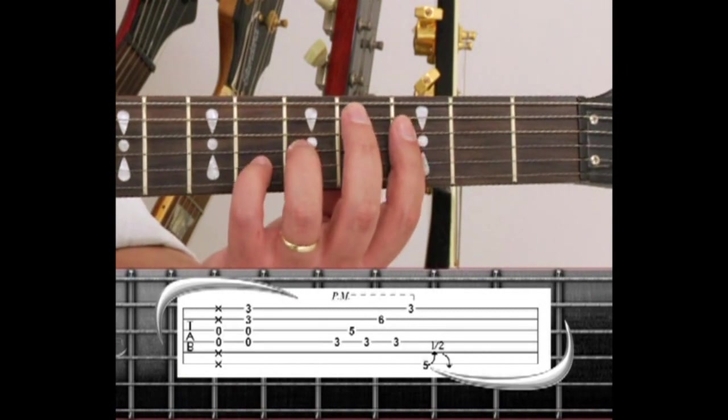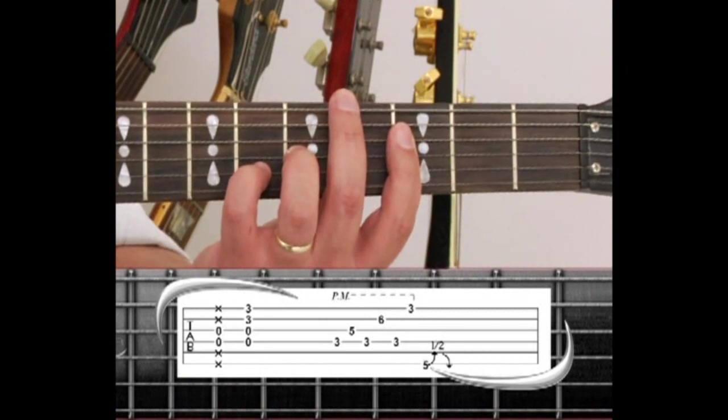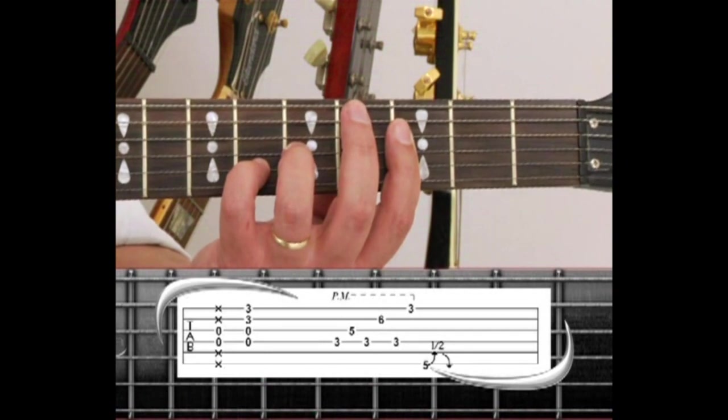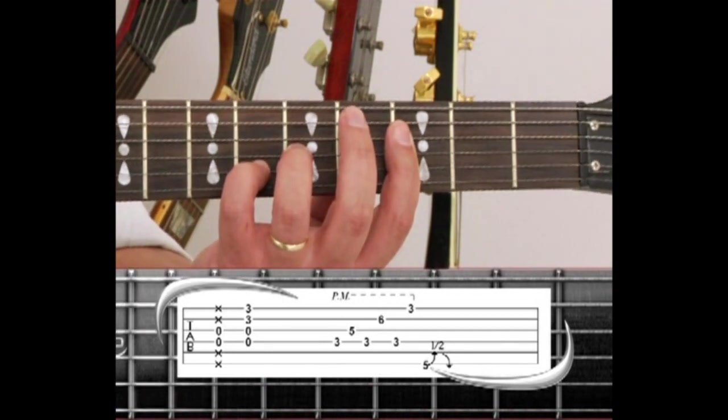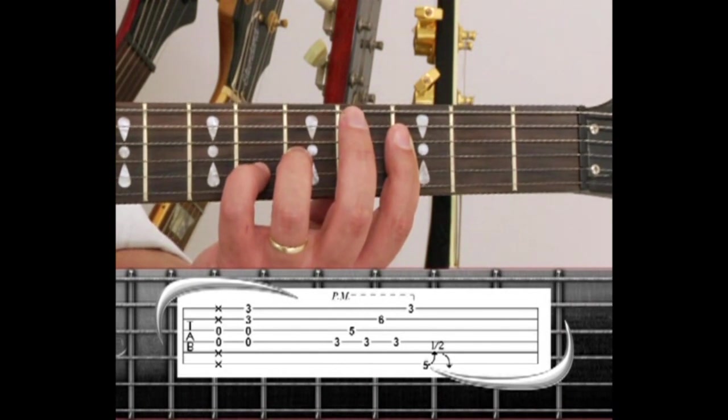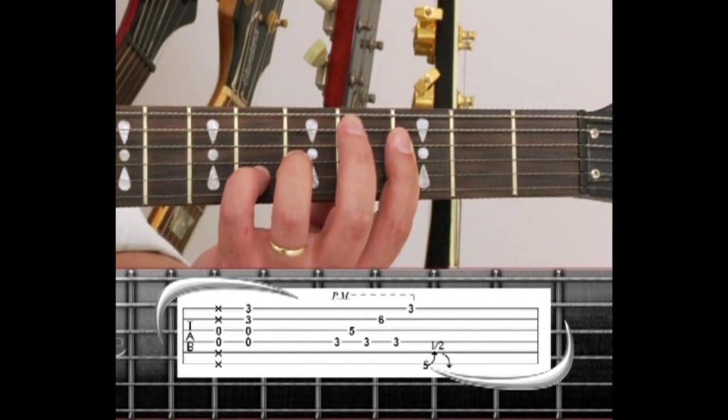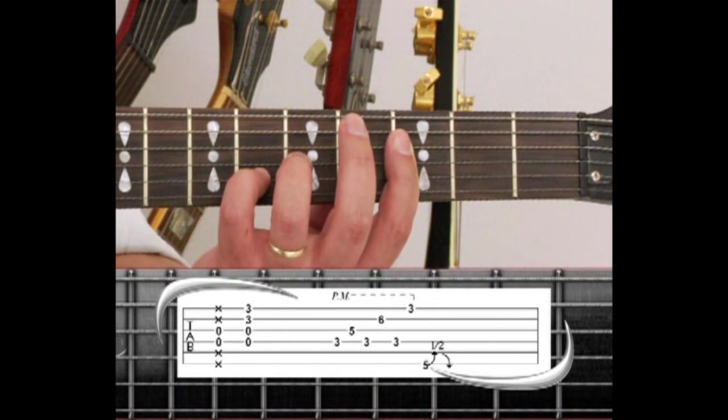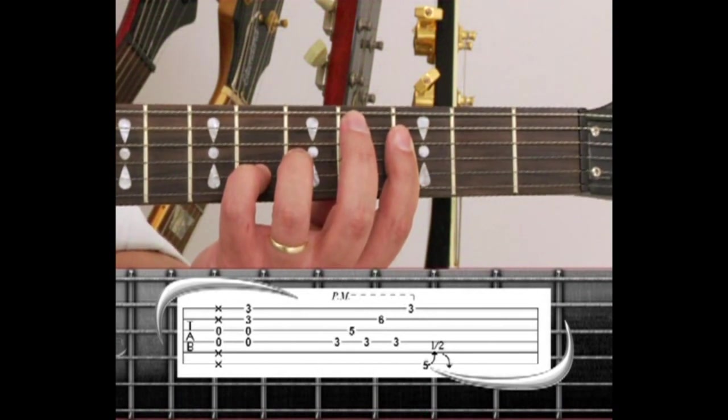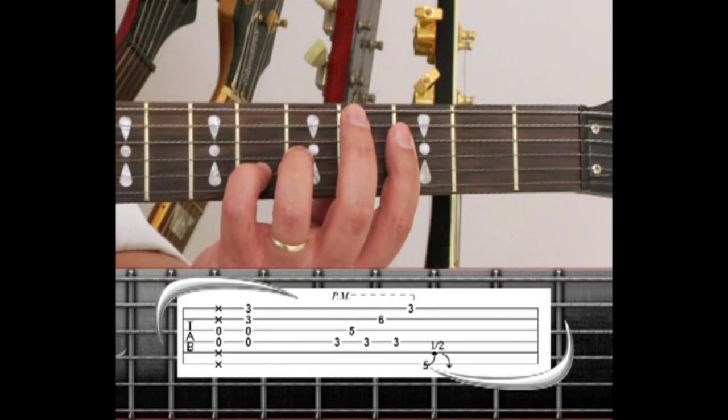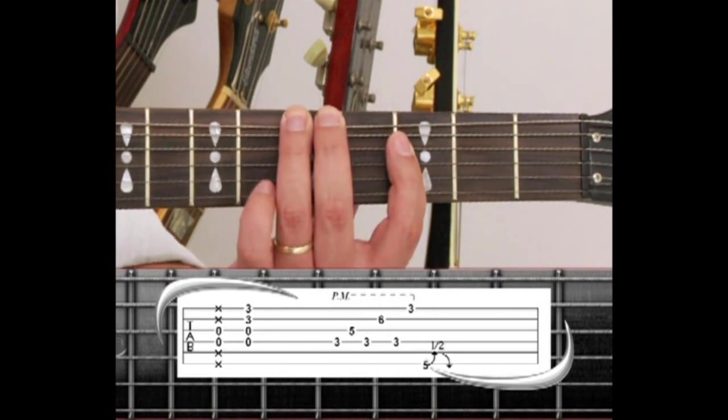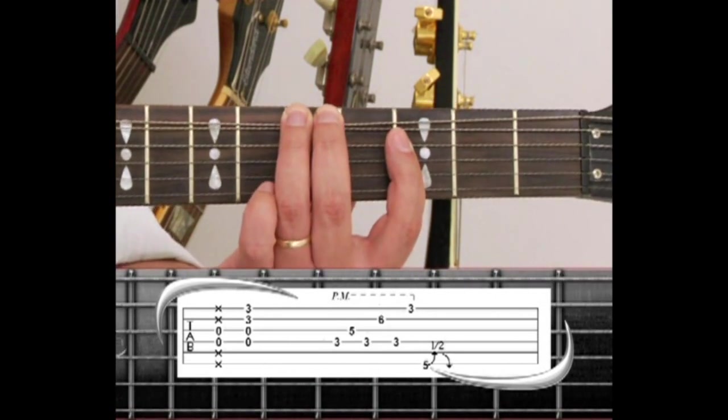Instead of strumming this Fsus2 chord, palm mute all 4 strings and pick the 4th string 3rd fret, then the 3rd string 5th fret, back to the 4th string, then to the 2nd string 6th fret, back to the 4th string, then the 4th string 3rd fret. Then stretch to the 6th string 5th fret with the ring finger, give it a half-step bend and release.